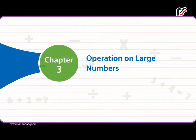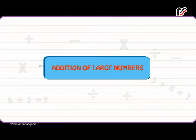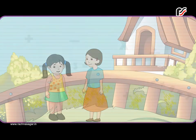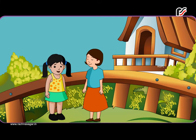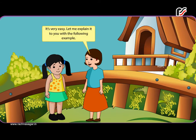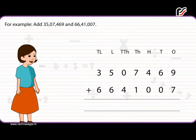Operations on Large Numbers. Addition of Large Numbers: I wonder how addition goes on in large numbers which are more than lakh or crore. It's very easy. Let me explain it to you with the following example. For example, add 35 lakh 7,469 and 66 lakh 41,007.